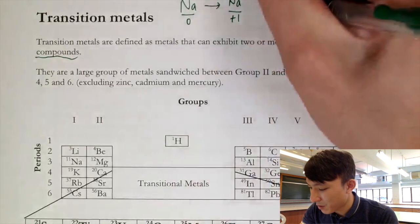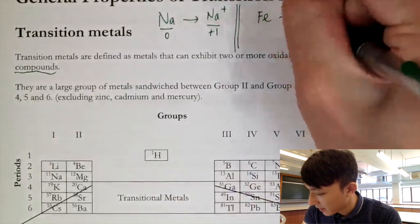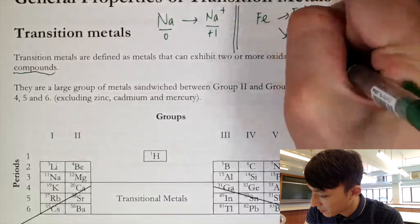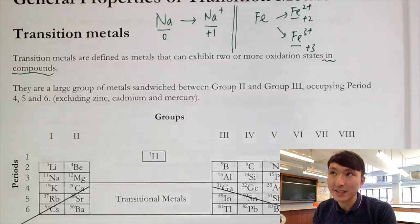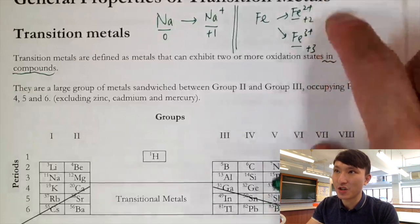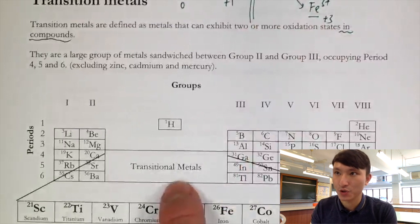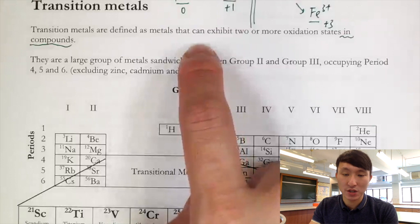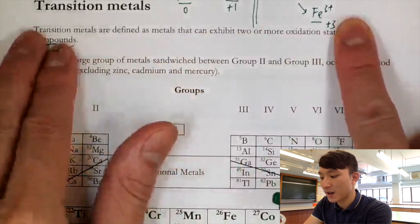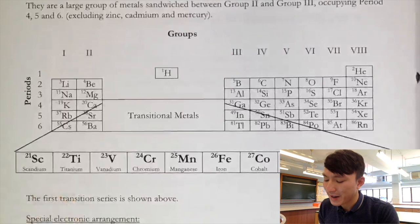Why is sodium not considered a transition metal? Because in compounds, sodium in its elemental form is not a compound, so we do not consider zero as the oxidation state exhibited in a compound. In contrast, iron (Fe) can form Fe²⁺ and Fe³⁺ — oxidation states of positive two and positive three — both existing in compounds like iron(II) oxide and iron(III) oxide. This fulfills the definition, so iron is a transition metal.